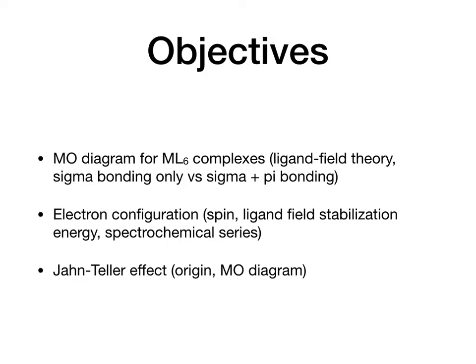After that, we're going to discuss electronic configuration — how to fill electrons into the MO diagram. Then there will be consequences of the electronic configuration, including the total spin of the complex, a new concept called ligand field stabilization energy, and a related concept called spectrochemical series. Finally, we're going to talk about the Jahn-Teller effect, discussing its origin and its impact on the MO diagram.